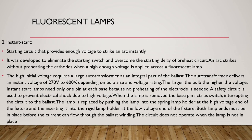The second method is instant start. Instant start circuits provide enough voltage to strike an arc instantly. It was developed to eliminate the starting switch and overcome the starting delay of preheat circuits. An arc strikes without preheating the cathode when a high enough voltage is applied across the fluorescent lamp. The high initial voltage requires a large auto transformer as an integral part of the ballast. The auto transformer delivers an instant voltage of 270 to 600 volts depending on the bulb size — the larger the bulb, the higher the voltage. Instant start lamps need only one pin at each base because there is no preheating of the electrode.